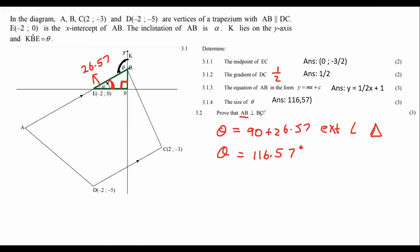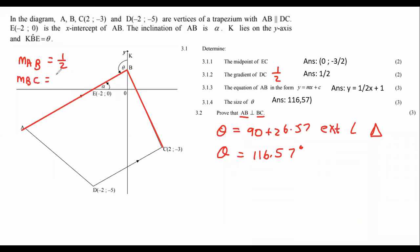The next question: prove that AB is perpendicular to BC. When two lines are perpendicular, we calculate the gradients of both lines and multiply them together. If the product equals minus one, then the lines are perpendicular. We already have the gradient of AB as a half. Now we need to calculate the gradient of BC.